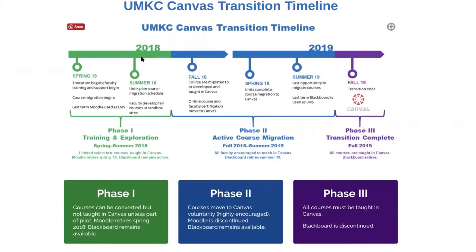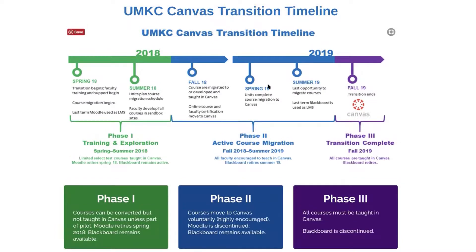Right now we are just almost towards the end of phase one in summer 2018. In fall 2018 we'll begin phase two, and during this time courses are going to begin to be taught in both Canvas and Blackboard. All of your courses will be created in the Canvas LMS. You'll need to make a specific request using the Blackboard request system if you're interested in teaching in Blackboard in the fall. Go ahead and check out that website when you have time and I will send that link to you at the end of this presentation.